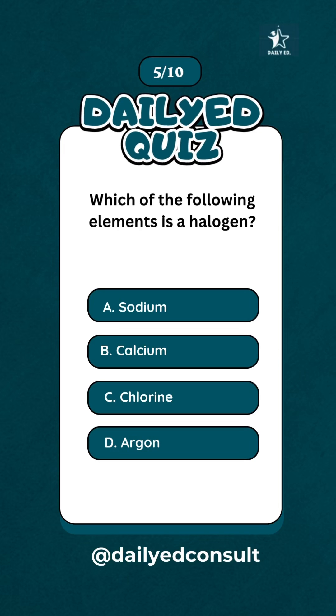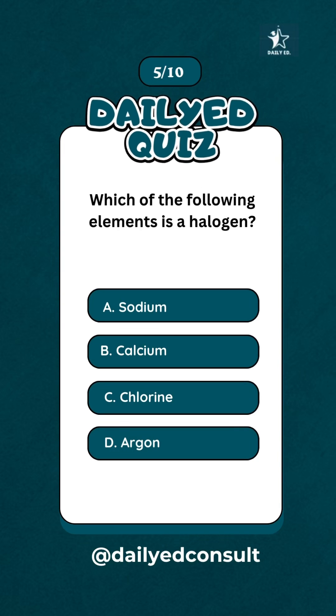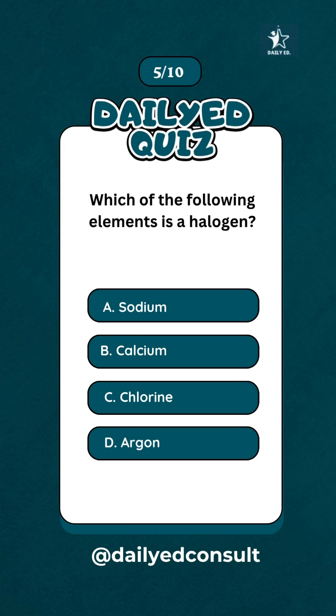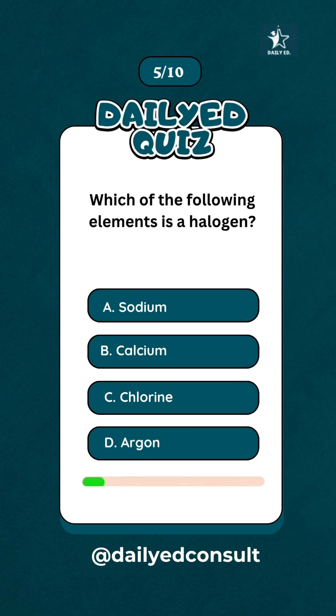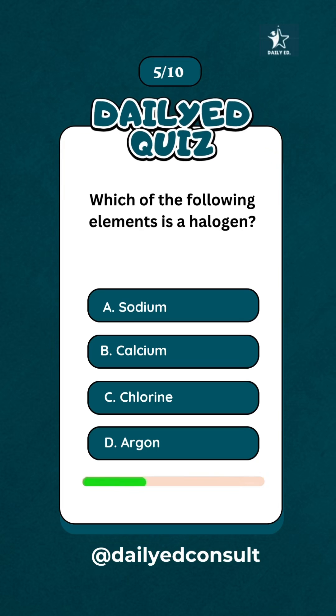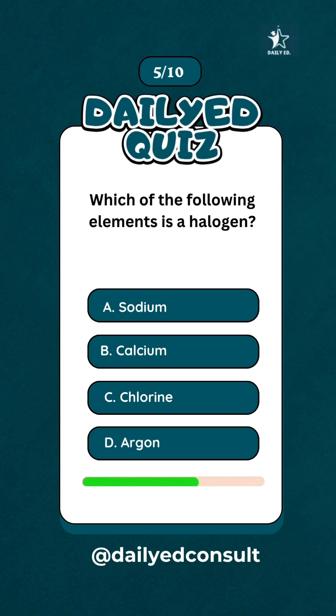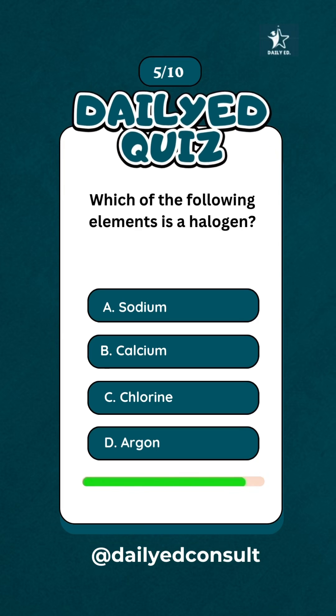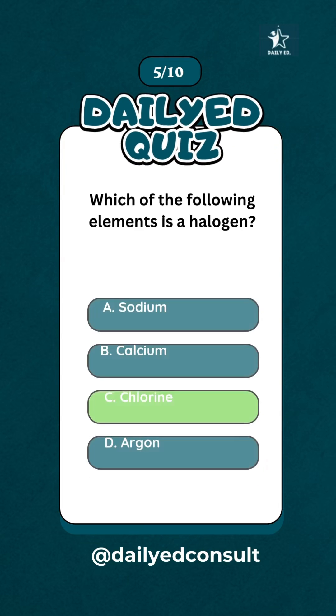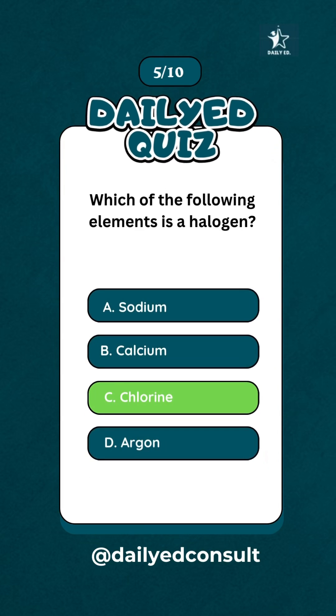Which of the following elements is a halogen? Chlorine.